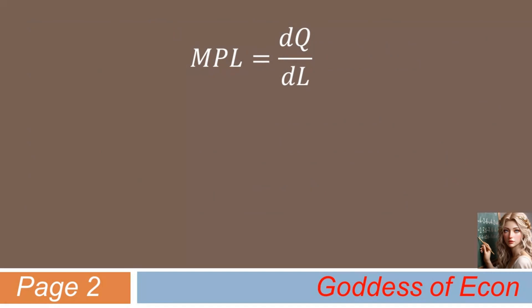Marginal product of labor equals dQ/dL. This definition of marginal product is slightly different from that without using calculus. It no longer represents how much the output would increase if the input of production increased by one unit. Rather, now it represents the ratio of an infinitesimal change in Q, to an infinitesimal change in its input, L.